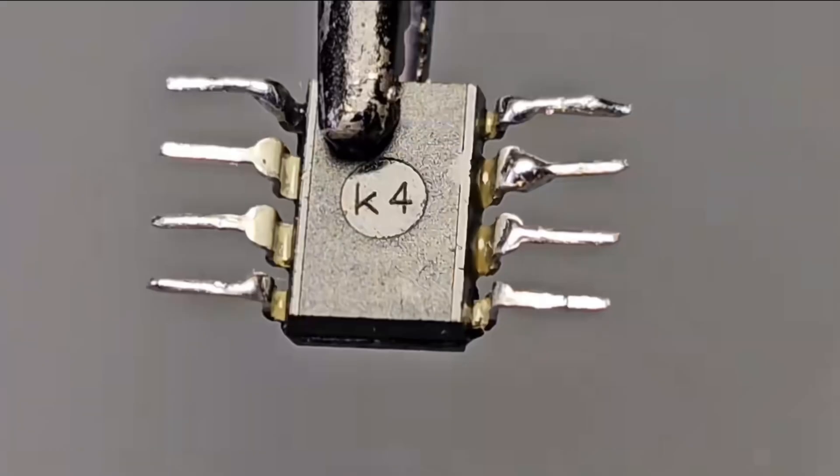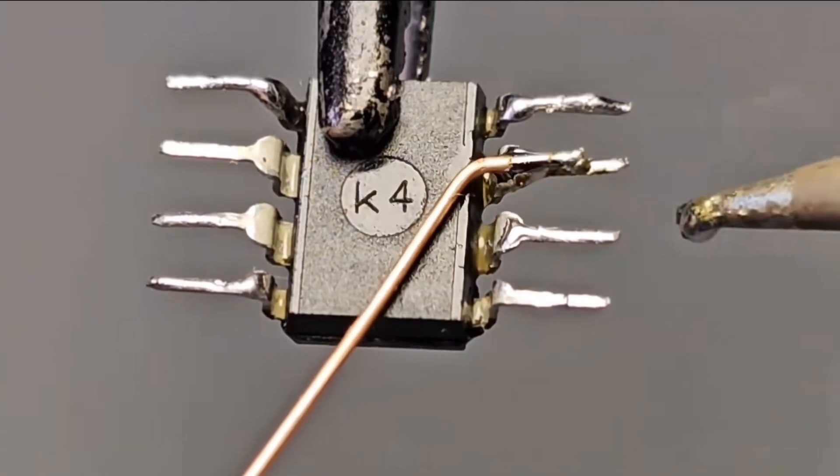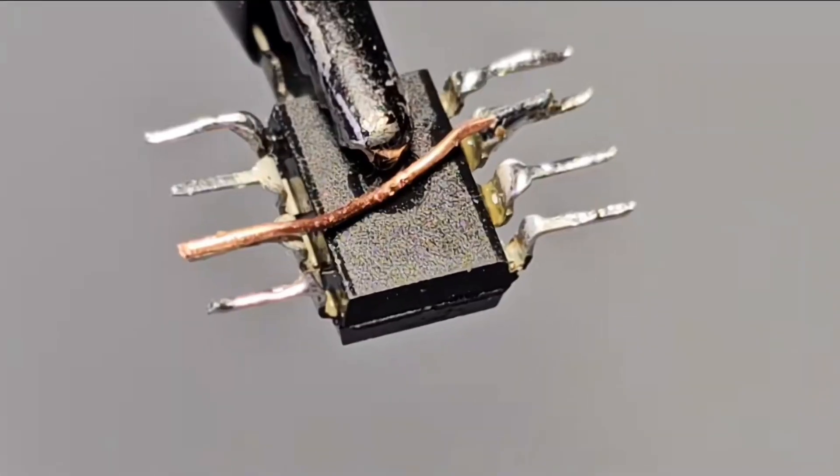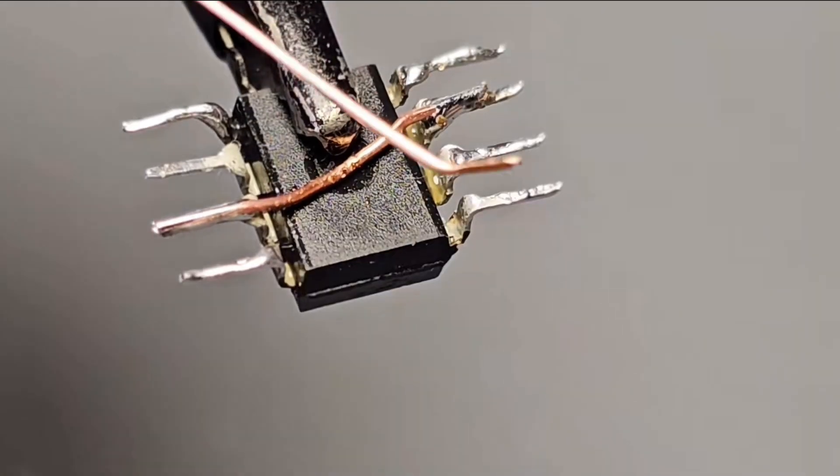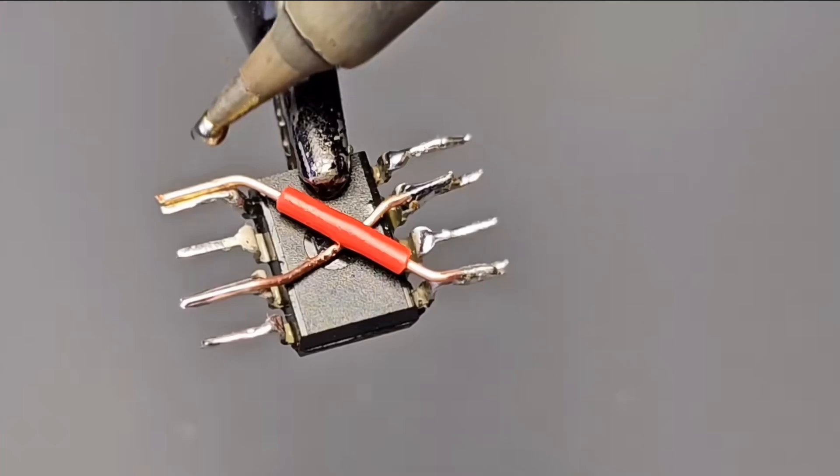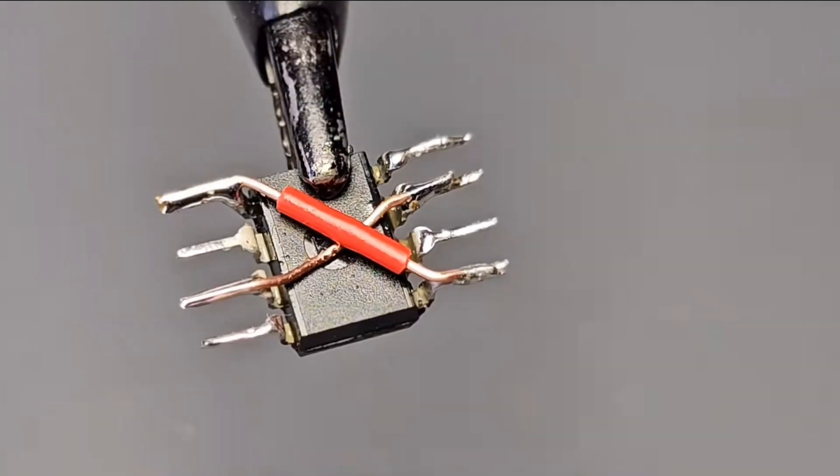Use a wire to short-circuit the trigger terminal, second pin, and the positive pole of the power supply, eighth pin. Then, short-circuit the eighth pin of the chip and the reset terminal, fourth pin together.